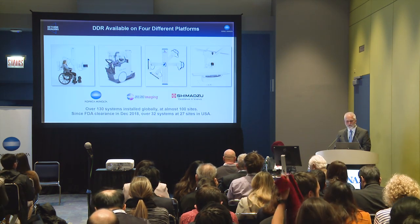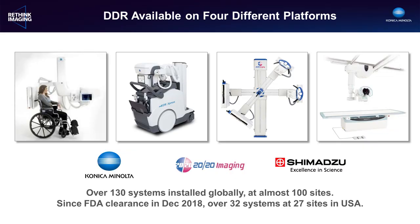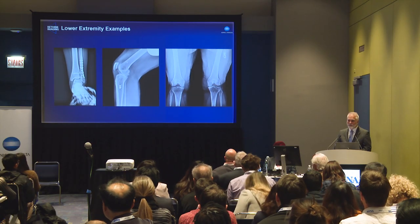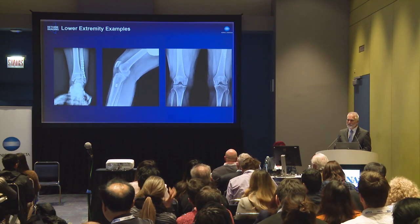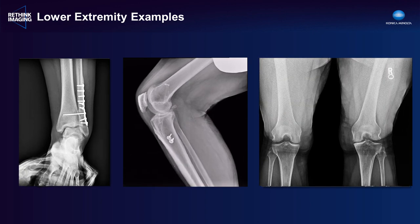DDR is currently available on four different acquisition platforms from three different vendors. In addition to the conventional overhead room, it's available on floor-mounted straight and U-arms. It has recently been cleared by the FDA for use with a wireless detector on a mobile setup so you can image the patient at the bedside. With this variety of systems, you can image the patient wherever normal x-rays would be taken, duplicating any of your standard x-ray views and exams.